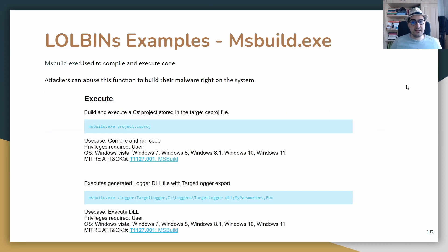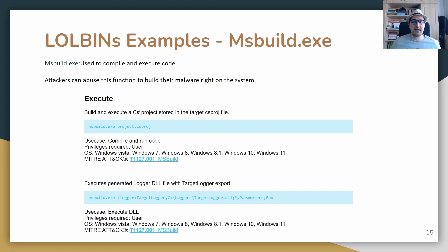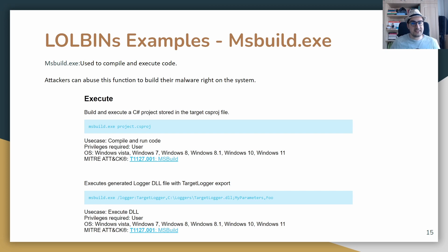The final highlighted LOLBin is msbuild.exe. Normally, when a user downloads a malicious file, the antivirus detects the hash or static analysis flags it as malicious and quarantines it. But an attacker using msbuild.exe can build the executable directly on your system. The attacker doesn't need to download Visual Studio or any compiler — msbuild is already available on the system.